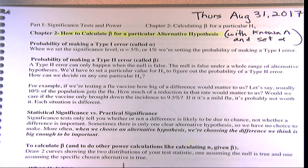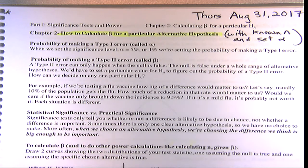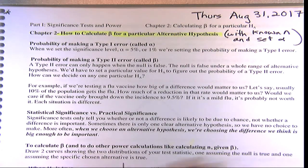We're moving away from the simplified scenario where there's just one alternative to where there's an array of alternatives, and we have to specify one. Given that we want to detect at least, say, a 5% reduction in disease rate with some vaccine, that's our specified alternative — the effect size we want to detect. Given our Type 1 error at five percent, we can then calculate the probability of the Type 2 error.